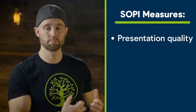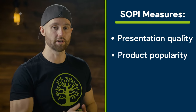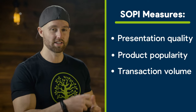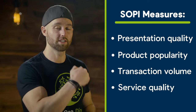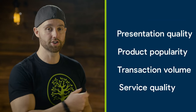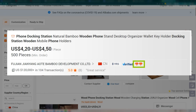SOPI is determined by evaluating a supplier on four areas. First is presentation quality — for example, the Alibaba listing completeness or certifications they own. Next is product popularity, which looks at average response times, number of RFQs, and conversion rates. Then transaction volume, which looks at gross merchant volume and the number of buyers in the past 90 days. Lastly is service quality, which looks at on-time delivery rate, buyer ratings, and number of legal violations. Each area is given one to five stars, and the SOPI — the number of diamonds on the listing — represents the lowest scoring area. So if you see four diamonds, that is their lowest scoring area.